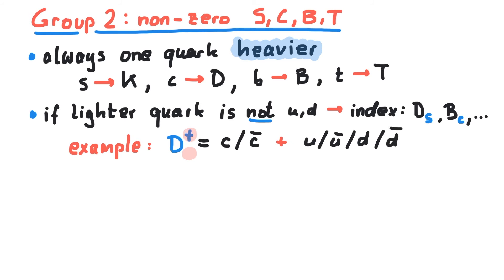The plus tells us that the electric charge is positive, which means that all flavor quantum numbers must also be positive. This means we must pair a charm quark with either an up quark or an anti-down quark. But since mesons are built up by one quark and one anti-quark, this can only mean charm plus anti-down.